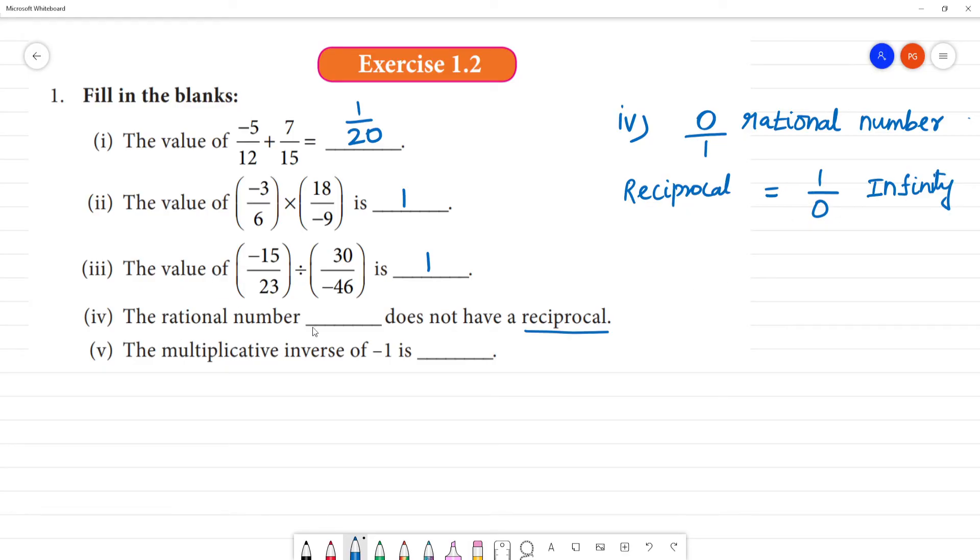The rational number does not have a reciprocal. This 1 by 0 cannot be identified. So the rational number that does not have a reciprocal is 0.